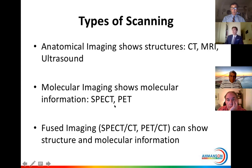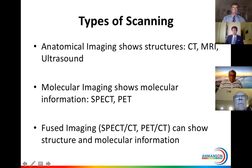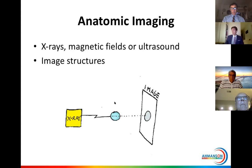Molecular imaging gives us molecular information about the cancer. The modalities that do this are SPECT, which stands for Single Photon Emission Computed Tomography, and PET, which stands for Positron Emission Tomography. To combine anatomical imaging and molecular imaging, we have what we call fused imaging, where we combine SPECT with CT or PET with CT. With these combined modalities, we can look at structure and molecular information at the same time.